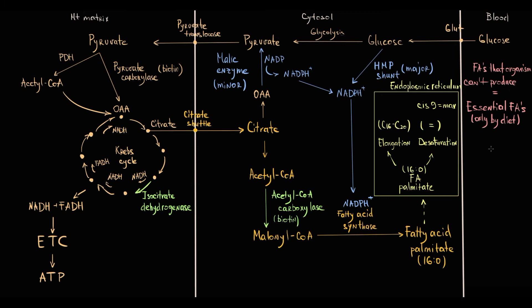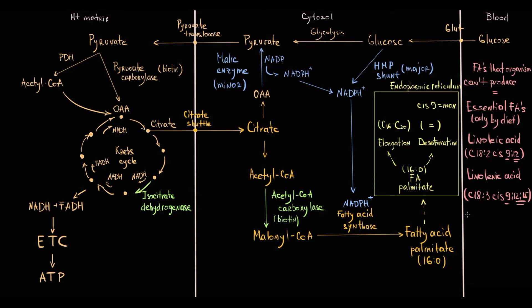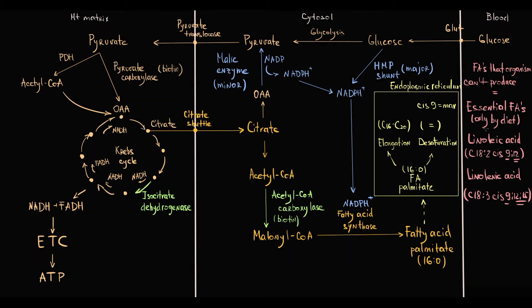Fatty acids that our organism cannot produce are called essential fatty acids, because they are essential components of the diet and their deficiency cannot be compensated by de novo synthesis. We have two essential fatty acids: linoleic acid, which has double bonds at positions 9 and 12, and linolenic acid, which has double bonds at positions 9, 12, and 15. The endoplasmic reticulum can only create a double bond at position 9, not at positions 12 or 15, so the only way to obtain these fatty acids is through diet.